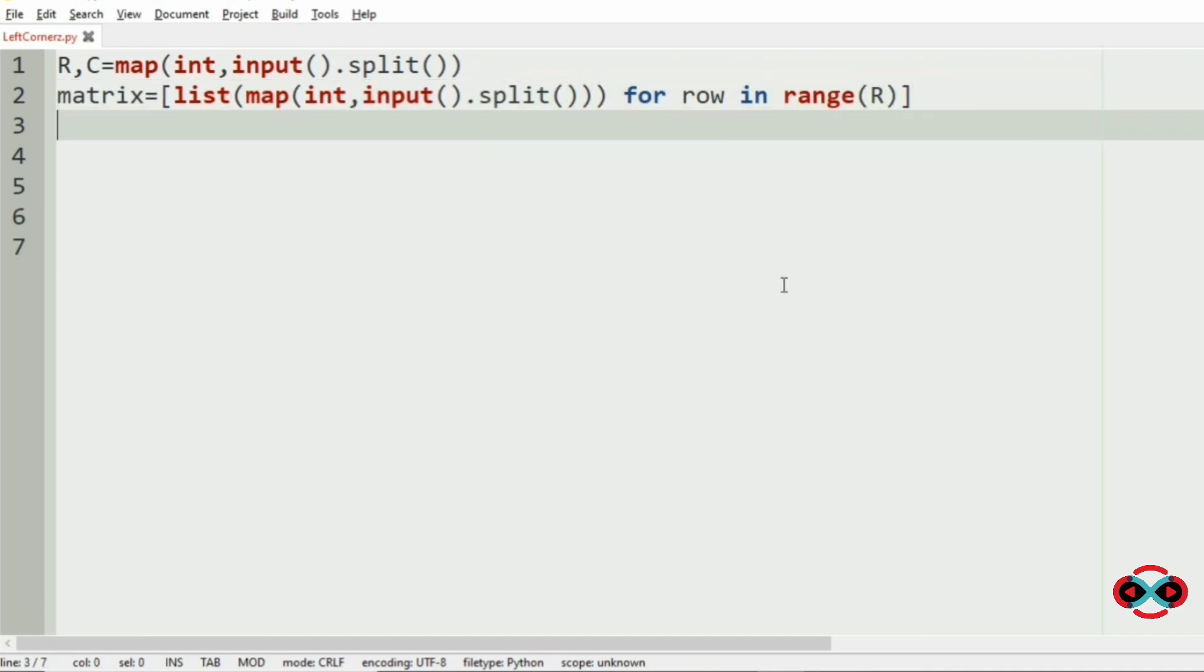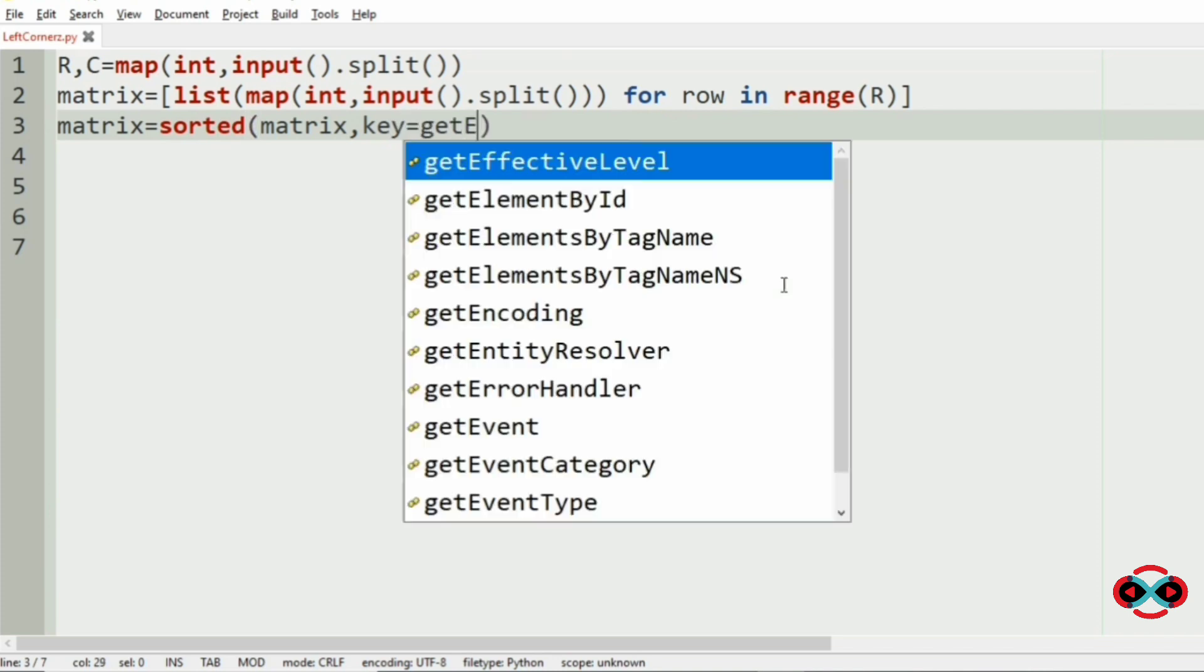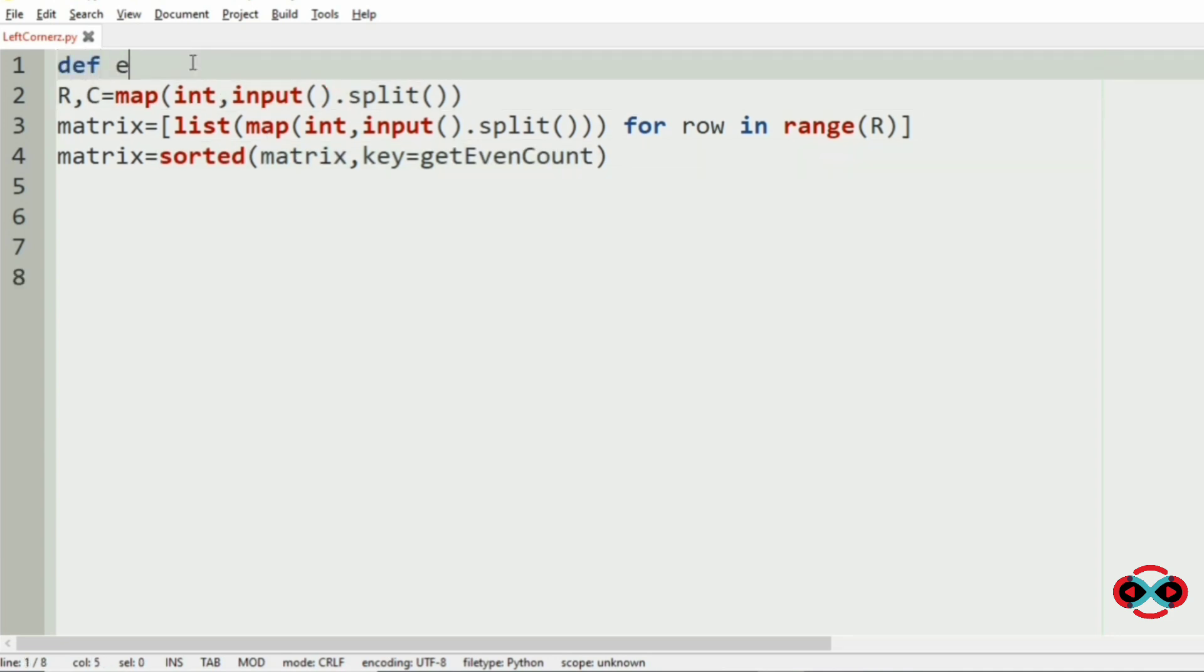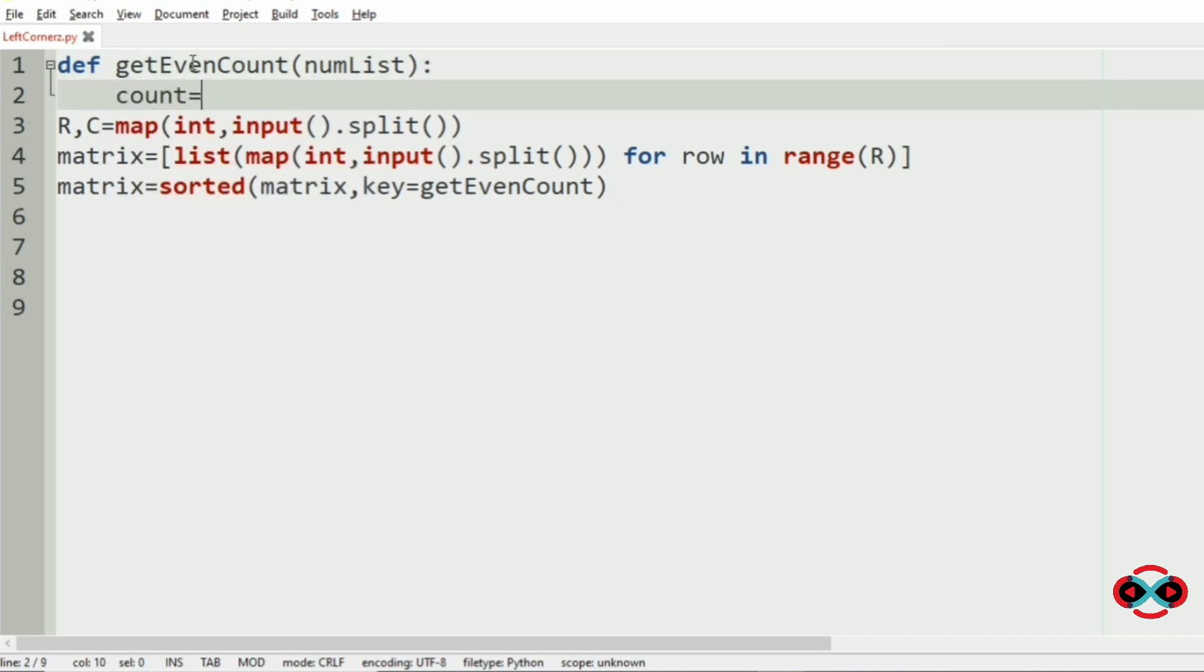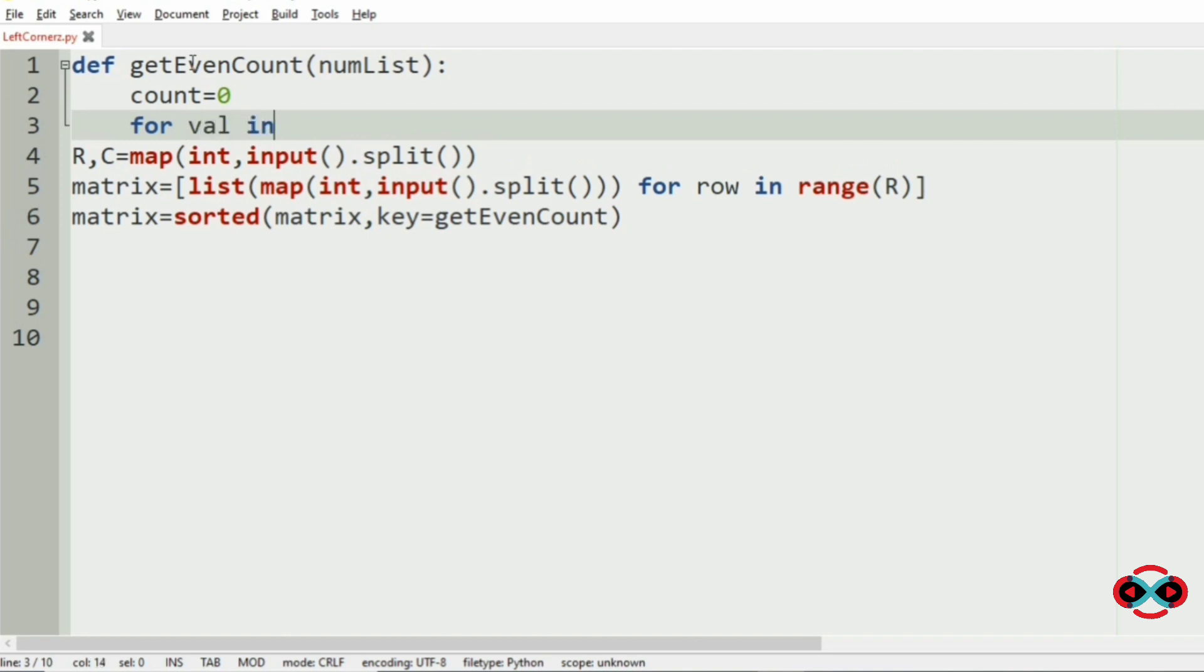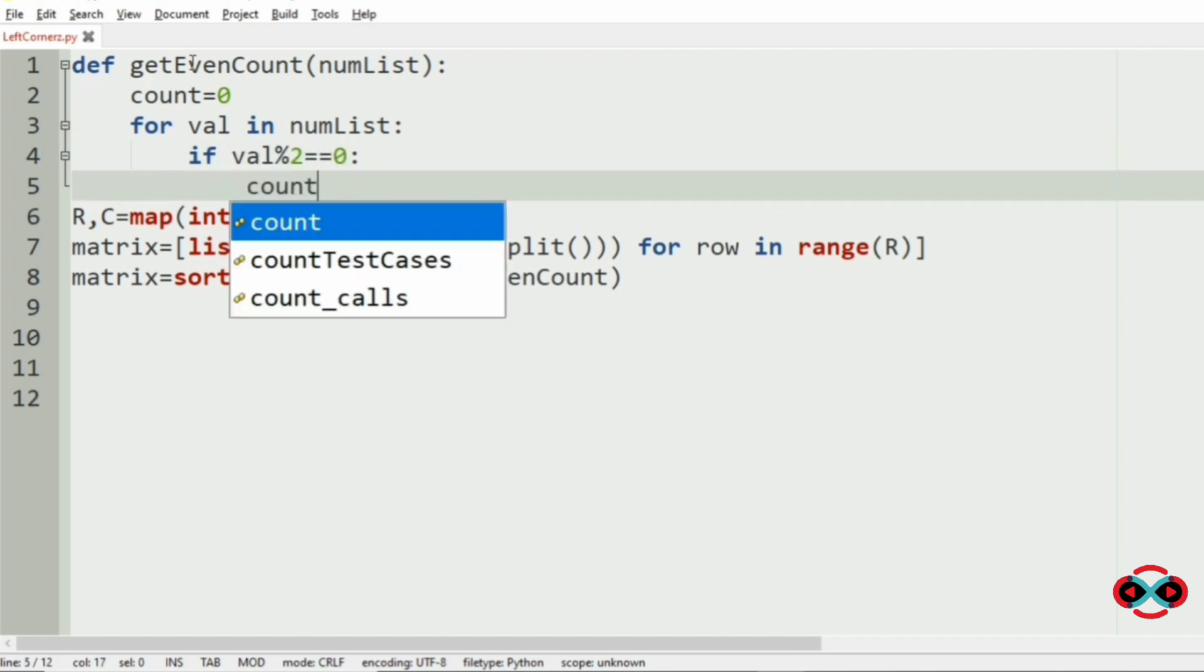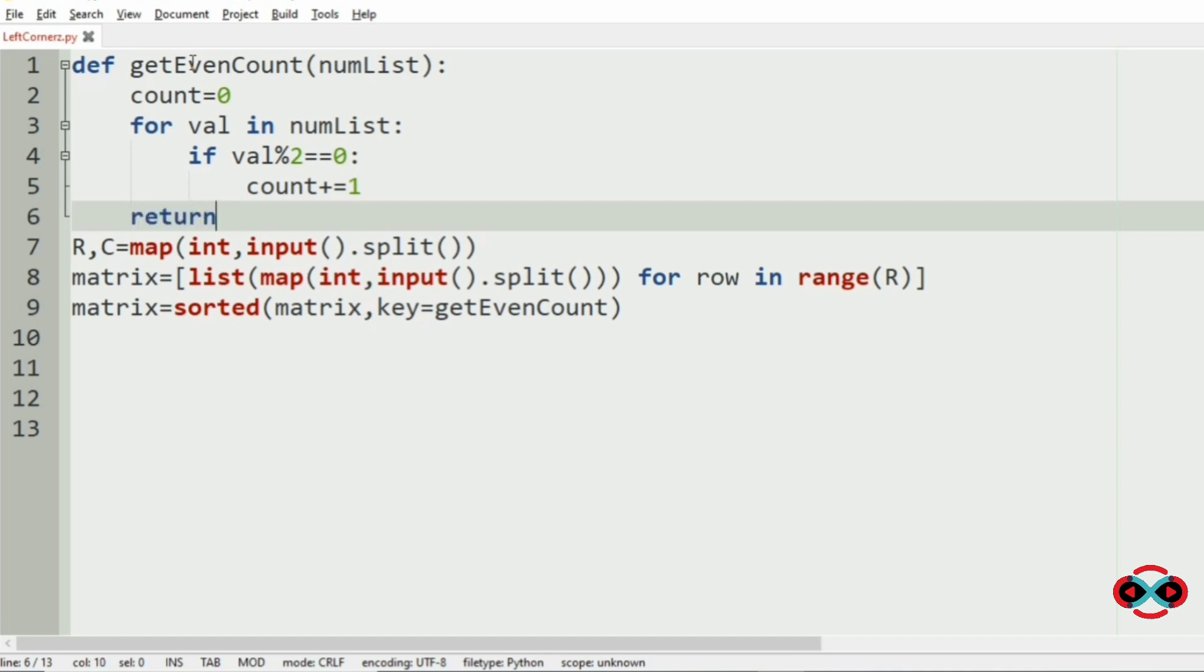Then now we have to sort the matrix based upon the count of even numbers in each row. So matrix equal to sorted of matrix comma key function that is key equals get even count. Now this get even count function will return the count of even integers in each row. So we will initialize it, get even count, the num list that is the row, so count equals 0. Then we will iterate the num list. Then if val modulo 2 equals 0, then count should be incremented by 1. Then we will return the count.